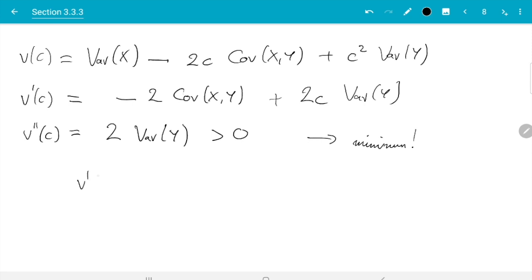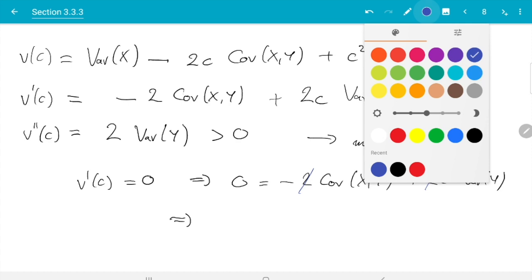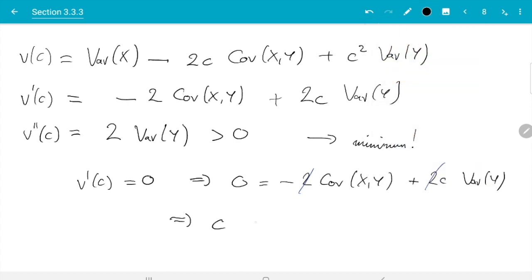And now to actually find the location we need to say v prime of c is zero and then we get zero is minus 2 covariance x and y plus 2 c variance of y. And we solve this for c. So what do we get, the two's cancel, minus covariance x and y goes to the other side and we get c equals covariance x and y divided by variance y. And that we have just seen is your optimal choice.